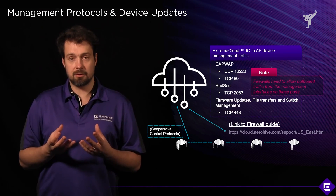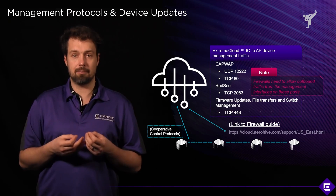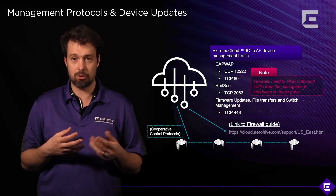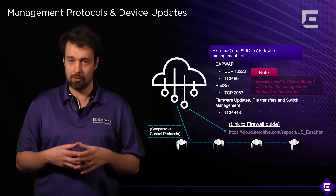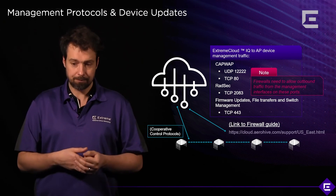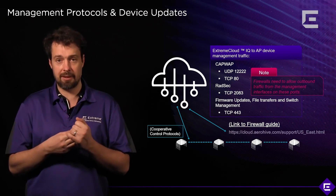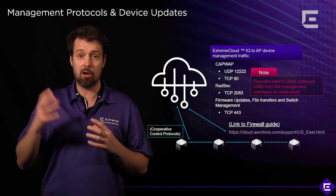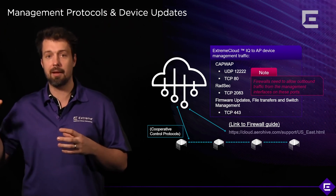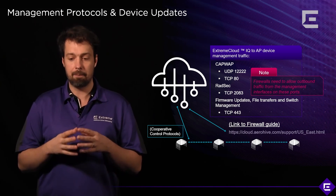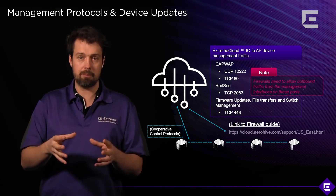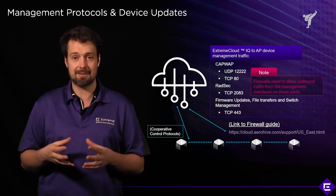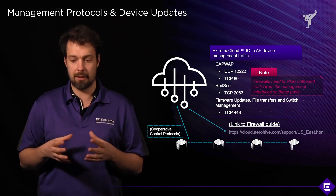The second protocol that needs to be enabled, if you're using private pre-shared key solution, is called RADSEC, which is basically encrypted RADIUS communication or RADIUS over TLS. That is TCP port 2083, and it's only needed if you implement PPSK with cloud-based authentication. If you use PPSK with cloud-based credentials, you will need to open TCP port 2083.